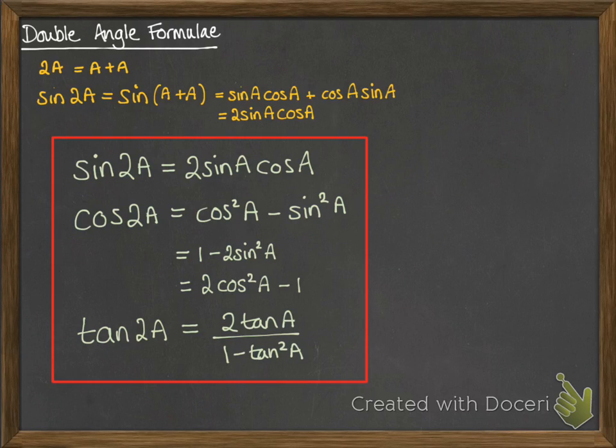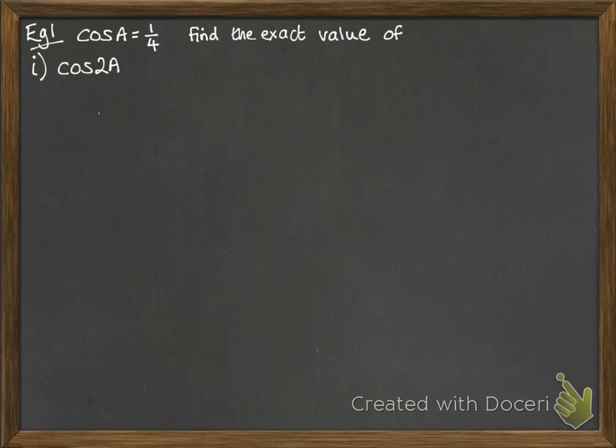Okay, so there they are. You've got them on your formula sheet, let's have a look at how to use them. So, we've got this example, cos(a) equals a quarter, we want to find the exact value of cos(2a). So we need to pick one of those cos formulae for the double angle formulae.